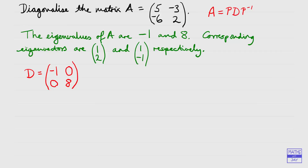Because I've written down minus one as our first eigenvalue, my first column in the matrix P has got to be the eigenvector that corresponds to that. So that's going to be the eigenvector (1, 2). The other eigenvector that corresponds to eight is going to be in the second column, so that will be (1, −1). So it's really simple to write down the matrices D and P.